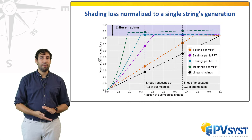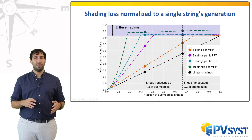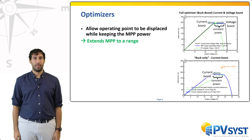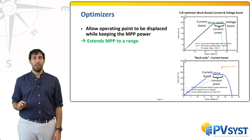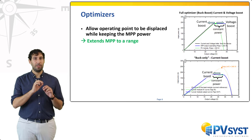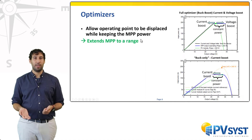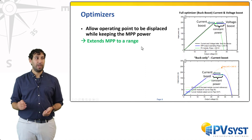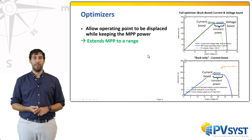Let us now make a brief detour on optimizers. Optimizers can usually alleviate the mismatch between components. They are power electronic components that are connected with subsets of inverter circuits. They allow the extension of the maximum power point of components to a range of voltages and currents. Effectively, they may boost the current or voltage of the operating point while keeping its power, at the price of a small reduction of overall efficiency.